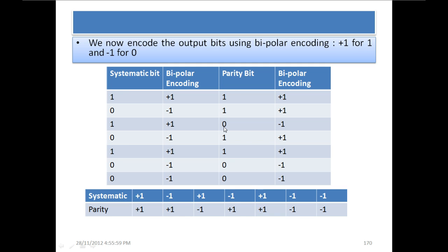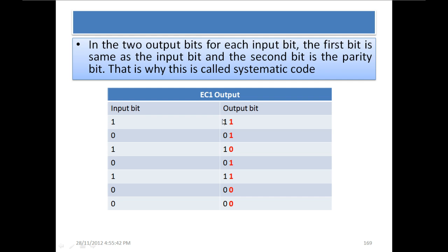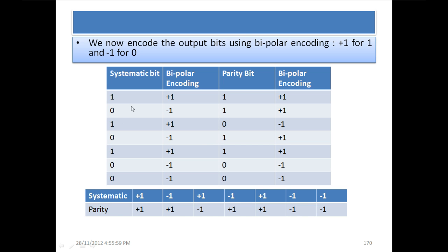Now we encode the output bits using bipolar encoding: plus 1 for 1 and minus 1 for 0. We are assigning voltage levels using bipolar encoding. Here the systematic bits and parity bits are shown in two separate columns. The systematic bits become: plus 1, minus 1, plus 1, minus 1, plus 1, minus 1, minus 1, minus 1, and the parity bits follow accordingly. This is the output of encoder 1 only.